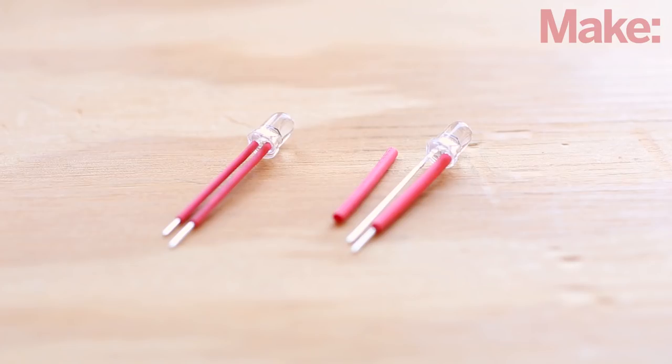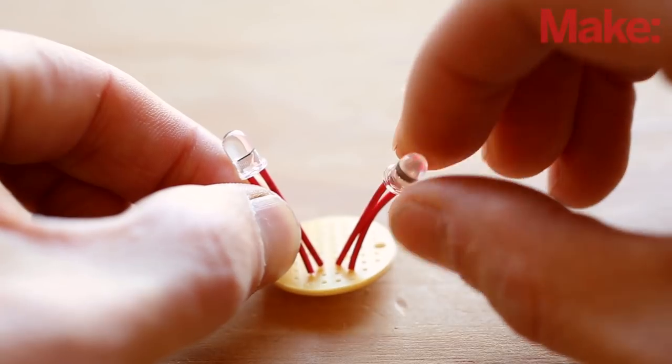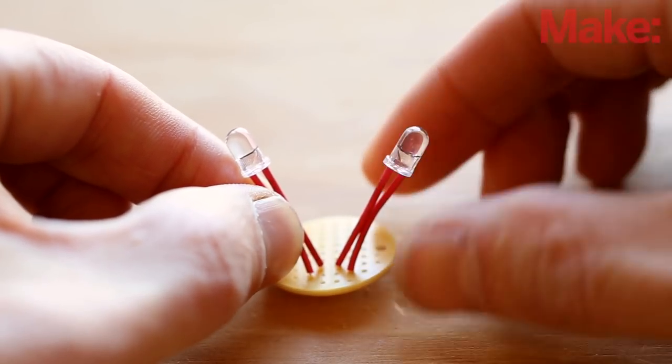We'll start with the eyes. Cover the leads of both IR detectors with heat shrink tubing except for the very ends. The leads function as maneuverable eye stalks and the insulation keeps them from shorting if they get bent or twisted together.